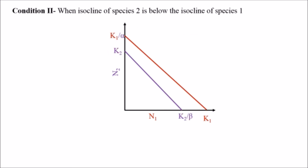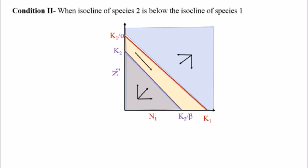Similarly, when the isocline of species two lies below the isocline of species one, we again have three areas. Area one: both species grow. Area two: both species decrease. Area three: this region is below the isocline of species one and above the isocline of species two, so species one wins and grows up to its carrying capacity, leading to the extinction of species two. These are the two conditions when the two isoclines do not cross each other.